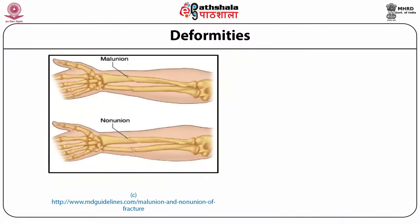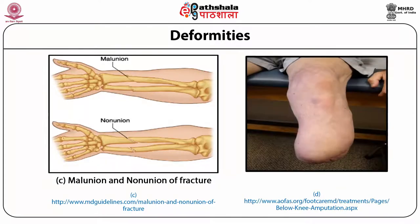The images show examples of congenital deformities — polydactyly where each hand has six fingers, and cleft palate as an acute example of congenital deformity — as well as acquired deformities such as malunion and non-union of fractures and amputation of a leg.